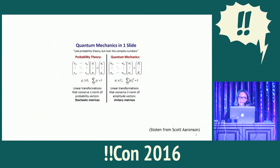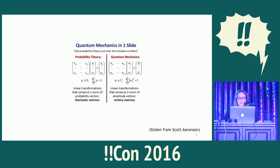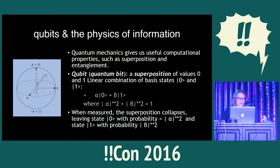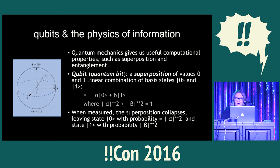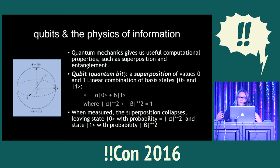I stole this from Scott Aaronson, who is a phenomenal physicist — quantum mechanics in one slide. You can think of quantum mechanics as being probability theory, but done over the complex numbers, and this allows us to compute things in a really interesting way. The basic unit for a quantum computer is a qubit. We have regular bits — ones and zeros — but a quantum bit is a superposition of values zero and one, a linear combination where something is both values at the same time. With measurement or noise we can collapse this superposition, and sometimes we'll get a zero out and sometimes a one.